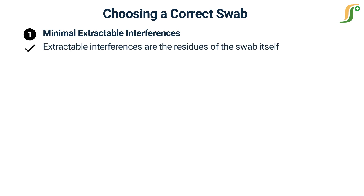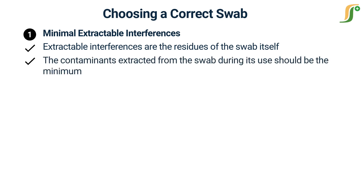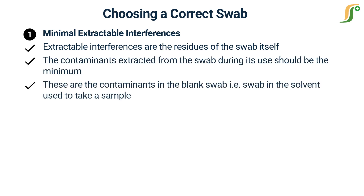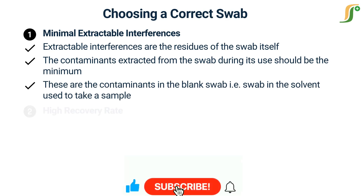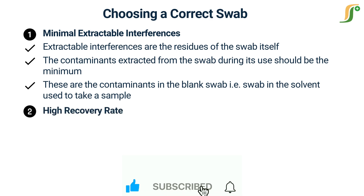First is minimal extractable interferences. Extractable interferences are the residues of the swab itself. The contaminants extracted from the swab during its use should be at a minimum. These are the contaminants in the blank swab — that is, the swab in the solvent used to take a sample.